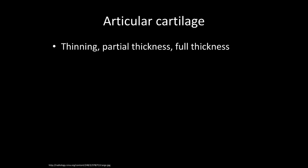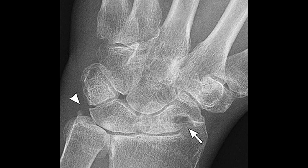Articular cartilage is the only thing protecting your bone from hitting the other bone — basically the shock absorber. We see it really well in MRI but not well in plain films. The whole reason there's a joint space is because there is interposed cartilage material. If there is bone on bone, you have full-thickness cartilage loss. Here there's really very little radioscaphoid or radiocarpal joint space, so we can infer complete cartilage loss. Then other things start to happen — there's a large subchondral cyst here.